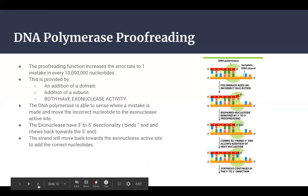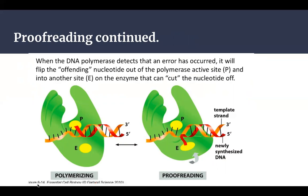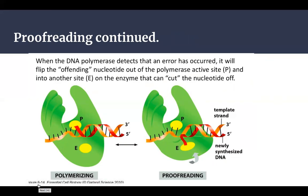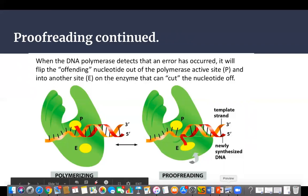So to reiterate: one domain is the polymerizing domain, shown on the left-hand side, and the other domain is the proofreading domain on the right, where the exonuclease activity occurs.